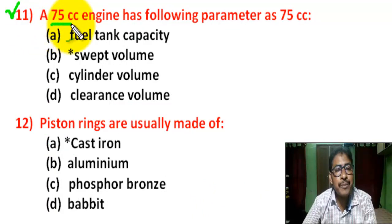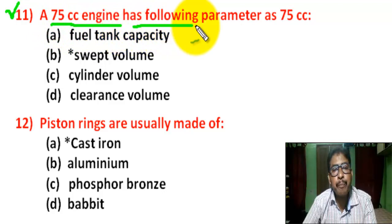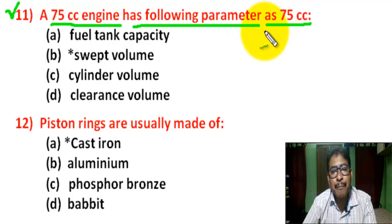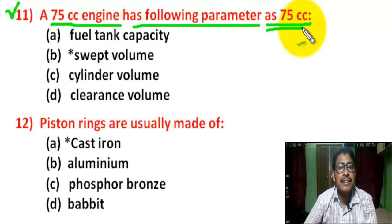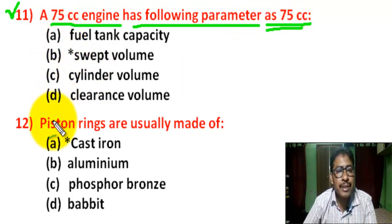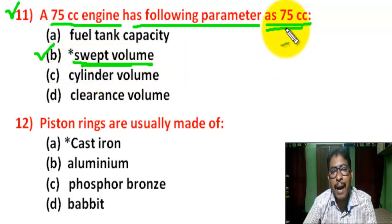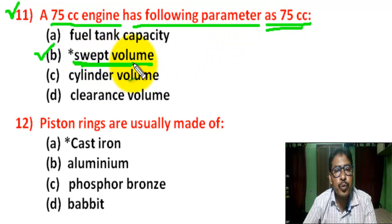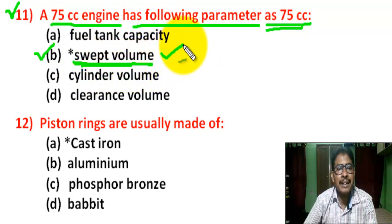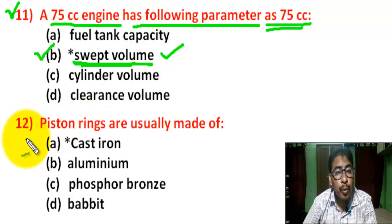Question number 11: A 75 cc engine has the following parameter — there are four options. Correct answer is B — swept volume. 75 cc refers to the swept volume of the cylinder.